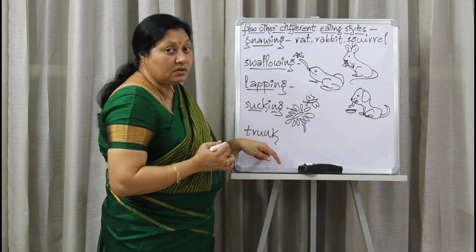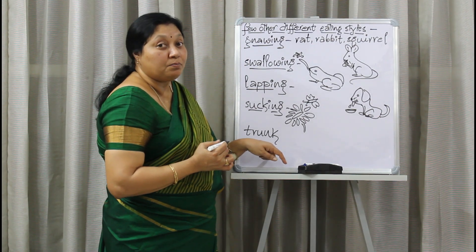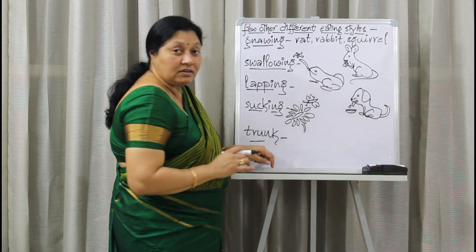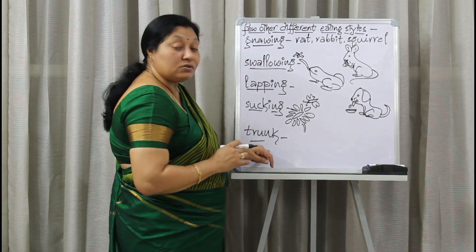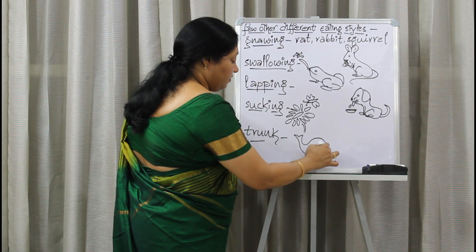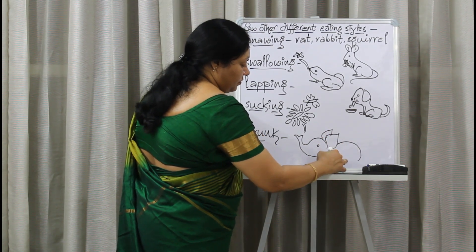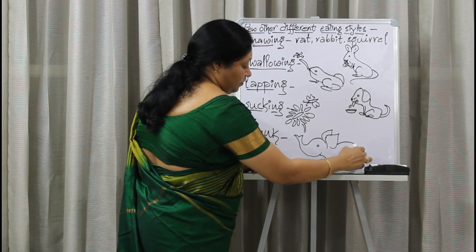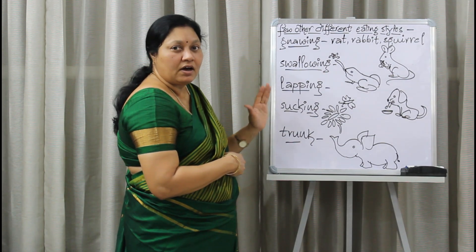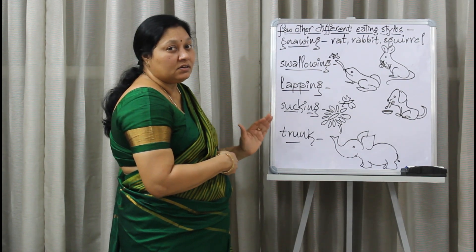An elephant uses its long trunk to gather food and put it in its mouth. It has a very large, long trunk to gather food and also to drink water. These are the different eating styles observed in different animals: gnawing, swallowing, lapping, and sucking.